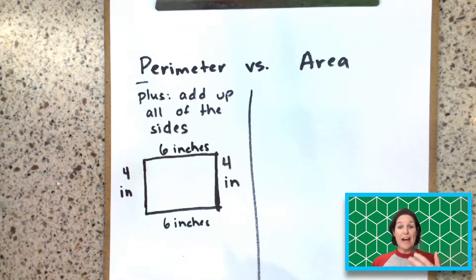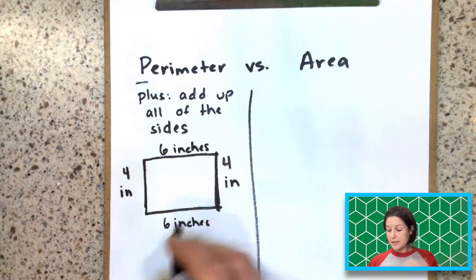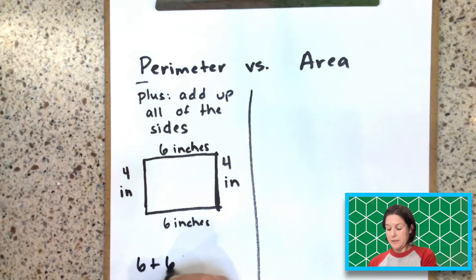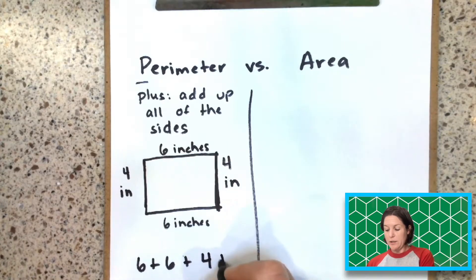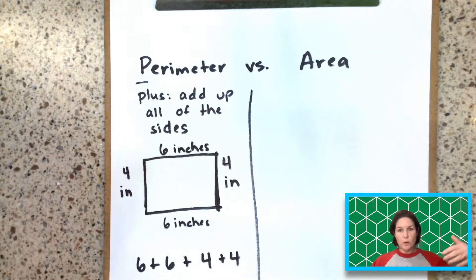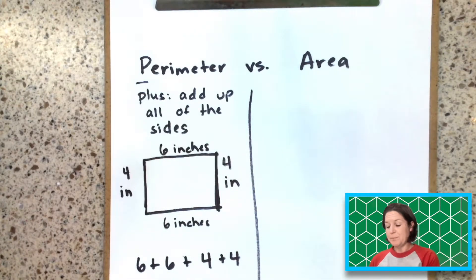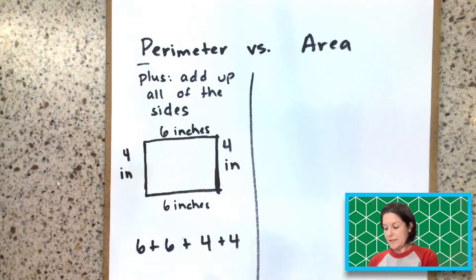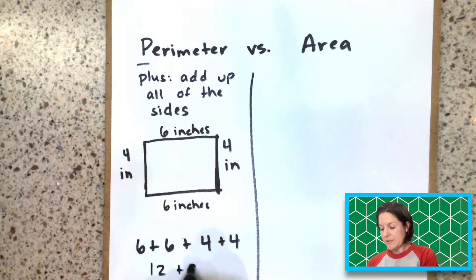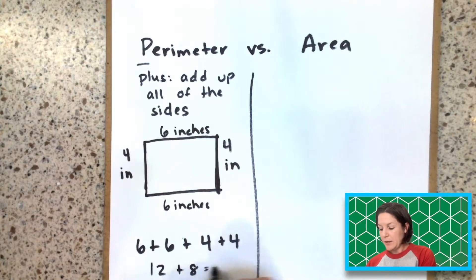So if we were to add up all the sides, we could say six plus six, six plus six plus four, plus four, or four plus four plus six plus six, or six plus four plus six plus four, whatever, you're going to get the same answer. And when we add those up, we get 12 plus eight, or 20.